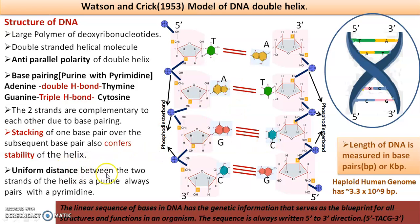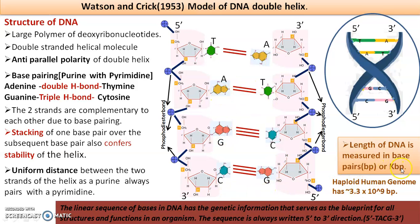The uniform distance between the two strands of the helix is maintained because purine always pairs with pyrimidine. The length of DNA is measured in base pairs — one pair is two nucleotides — or in kilobase pairs. The haploid human genome is found to be approximately 3.3 × 10⁹ base pairs.